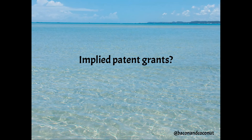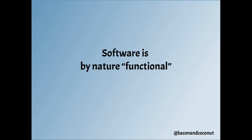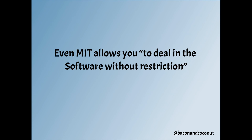Implied patent grants: there were a lot of software licenses written before the glut of software patenting. But does that mean older licenses don't give you a patent grant? Software by nature is functional. If you look at the MIT license, it says you can deal in the software without restriction — which sounds like you can implement the function of the software, which is usually what a patent covers. So even the MIT license, which is very short and doesn't have the word 'patent' in it at all, some people believe has an implied patent grant. It hasn't been tried in court. The people who think the implied patent grant is not a thing tend to be companies I'd expect to actually write the letters bringing those patent suits.